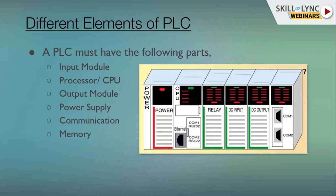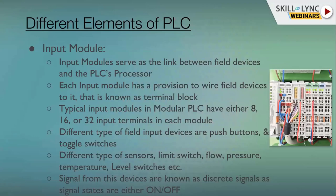A typical PLC will have at minimum: input modules, a processor, output modules, a power supply, communication, and memory. As shown in the image, these are placed one after another in a modular PLC. The power module is typically on the leftmost side, then the CPU, then the input/output modules. Power and CPU can be on the right side depending on the make of the PLC — we have to follow the manufacturer's rules for placement.